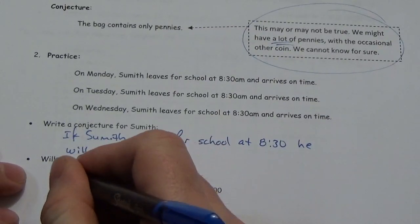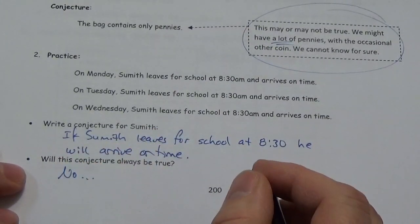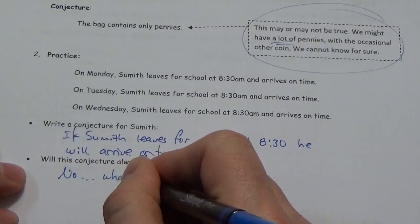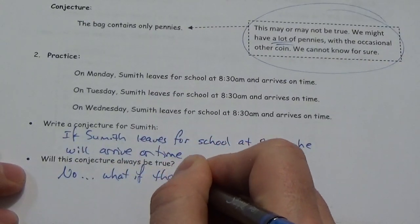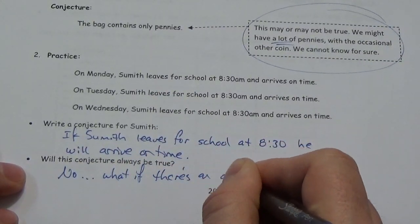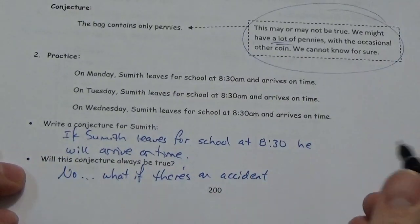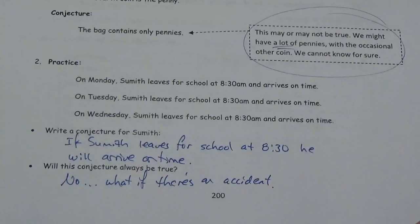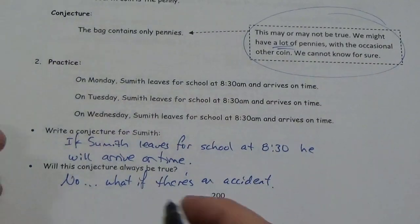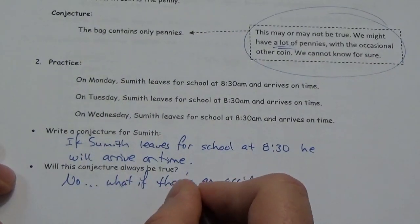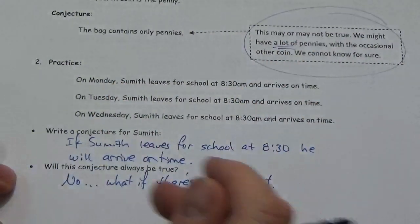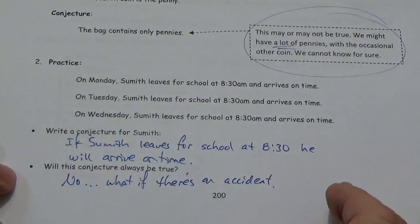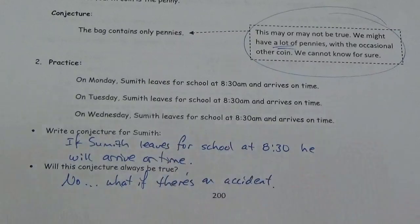Will this conjecture always be true? Well, no. What if there's an accident? And he's late. There's all sorts of reasons, right? What if the weather is miserable and then the traffic is really slow? There's all sorts of things that could keep that from happening here. But that, based on the pattern that we've established, that is a reasonable conclusion. It's just that we don't know whether it's true or not.